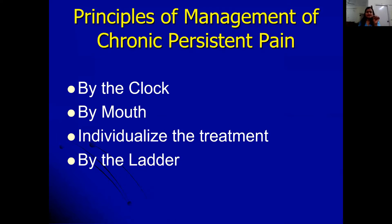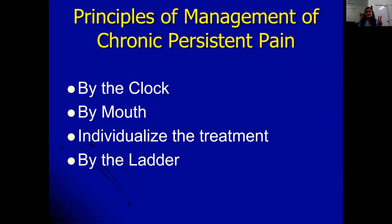The first principle is giving the drug by the clock. Every medication has a duration of action — for example, tramadol has a duration of eight hours, so it must be given eight-hourly. If you give one dose in the morning and one at night, the pain will return in the afternoon, subjecting the patient to on-and-off pain. Good pain management means giving medicine according to its duration of action.